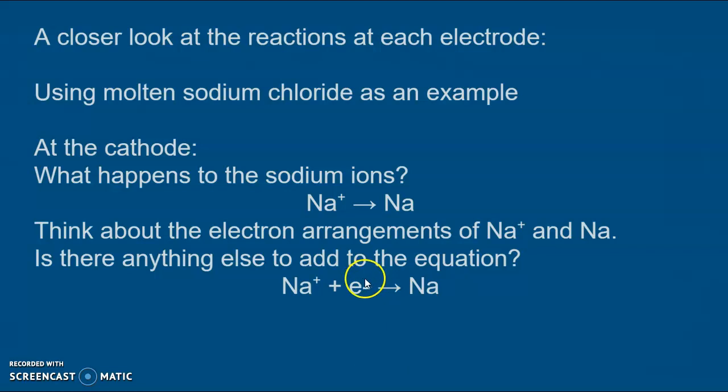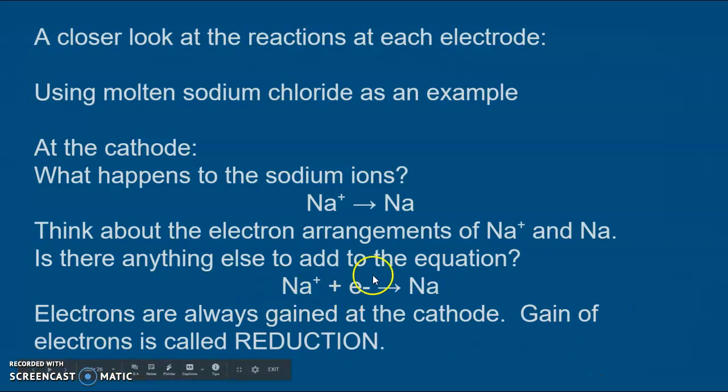That little minus can be written as a subscript but it goes very small if I do that on this font. So sodium ions have to gain one electron to form sodium atoms. And if you think similarly about other substances like Mg2+ going to Mg. Mg2+ is 2,8 plus but Mg is 2,8,2. You'll work out that you need to add two electrons.